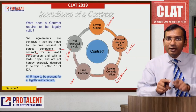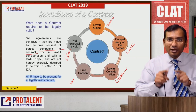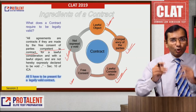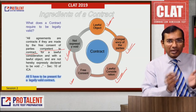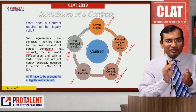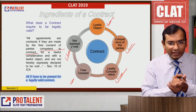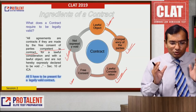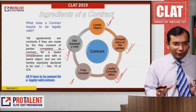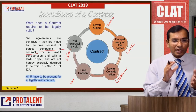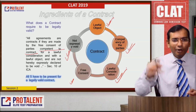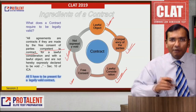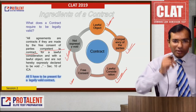For example, in Gujarat, liquor selling and buying is banned. Even though it may be allowed in other states, a contract for such a transaction in Gujarat would not be considered valid. All five conditions must be present simultaneously for a legally valid contract.